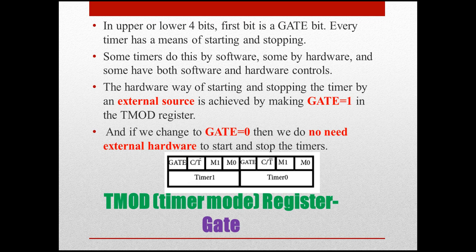The timer can be turned on and off. In the coding process, the timer can be turned on and off via software. The hardware way is to start or stop the timer by external sources — the gate bit controls this on and off action via external input.